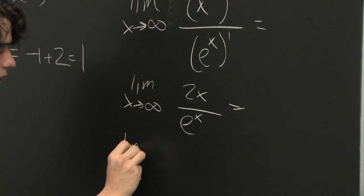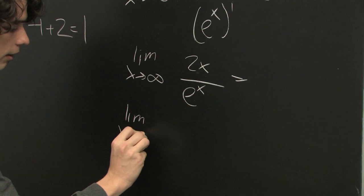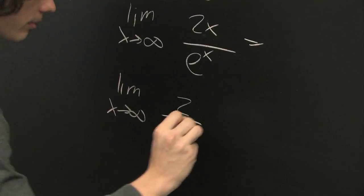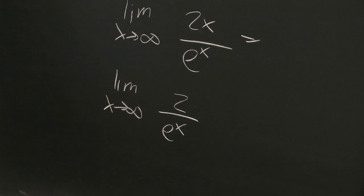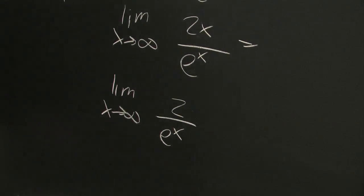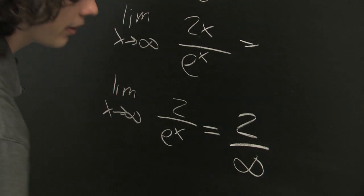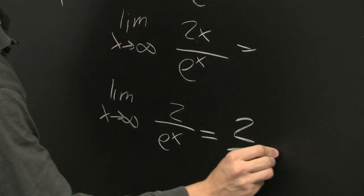And we get limit as x goes to infinity of 2 over e to the x. Well here if we plug in the limit, what we get is 2 over infinity, which is simply zero.